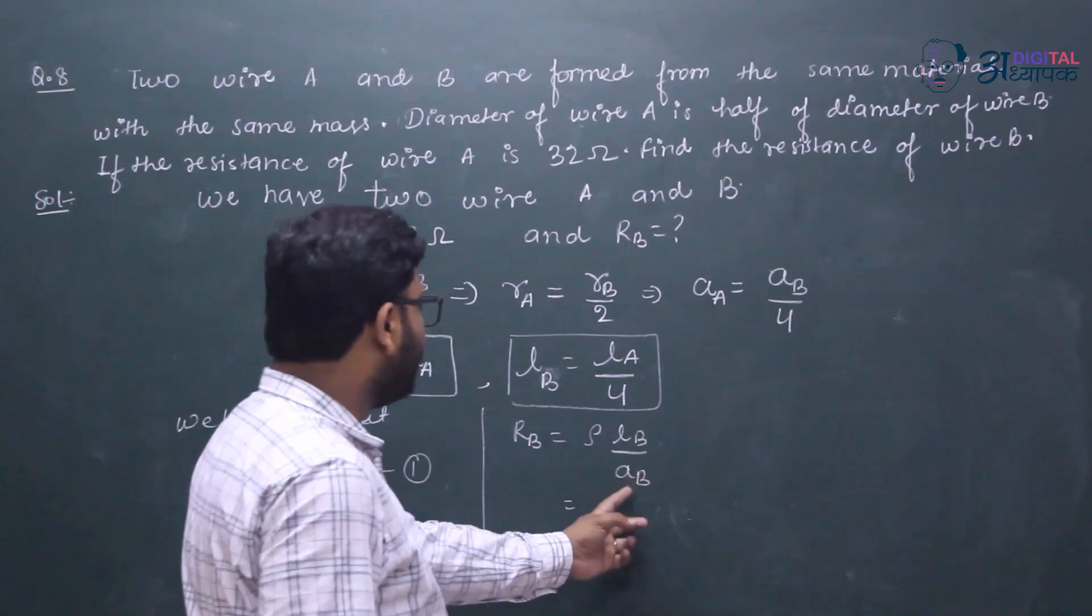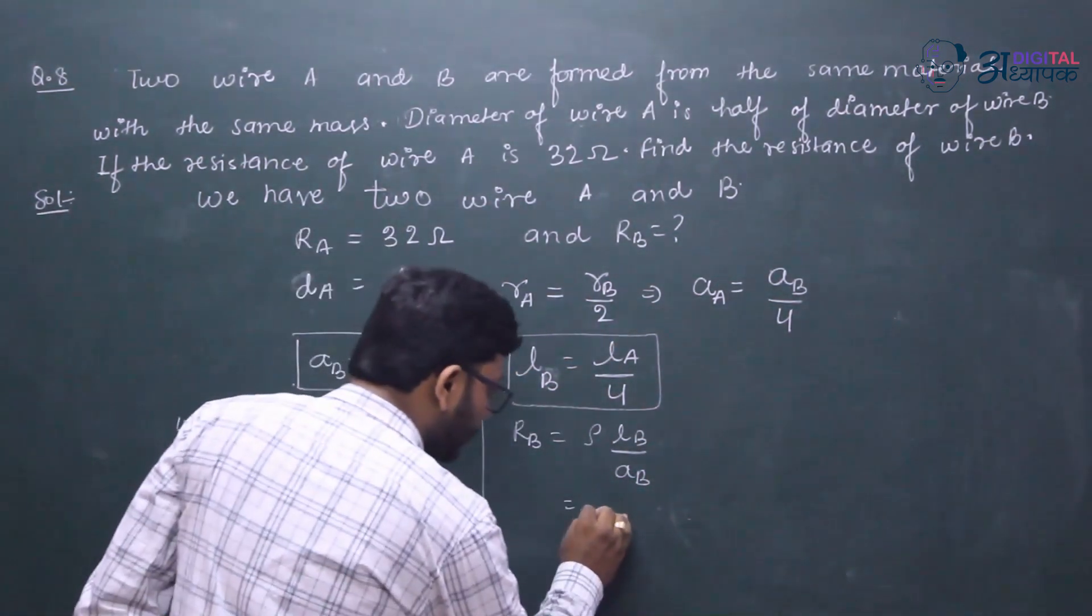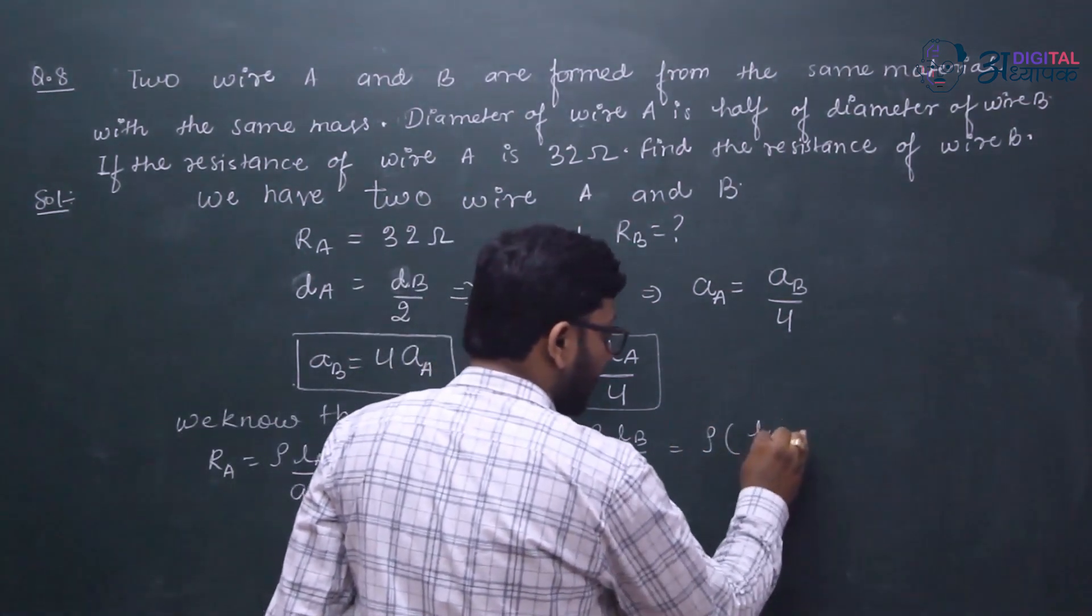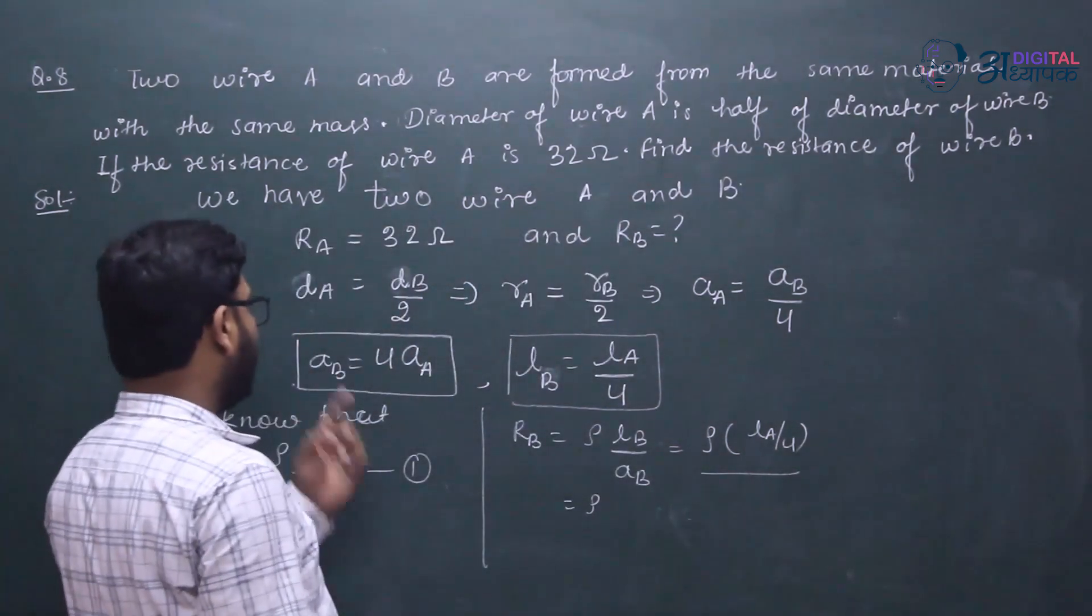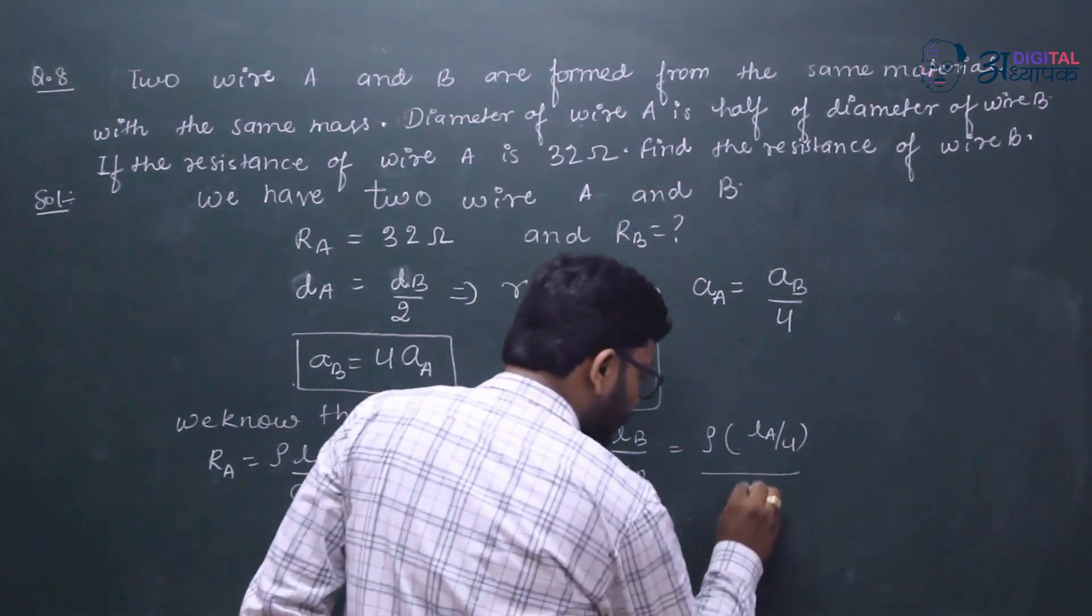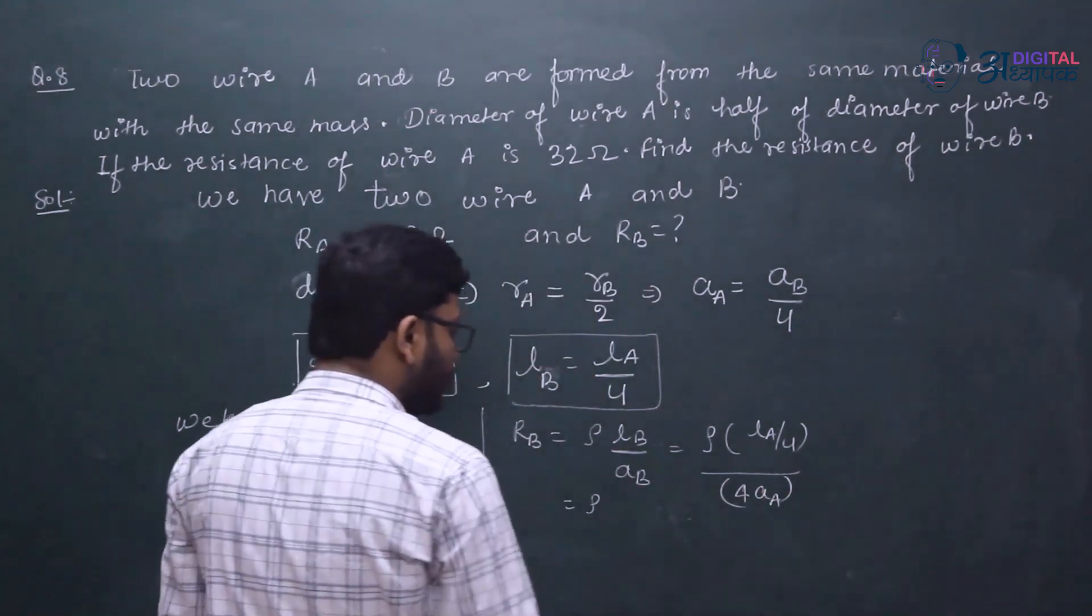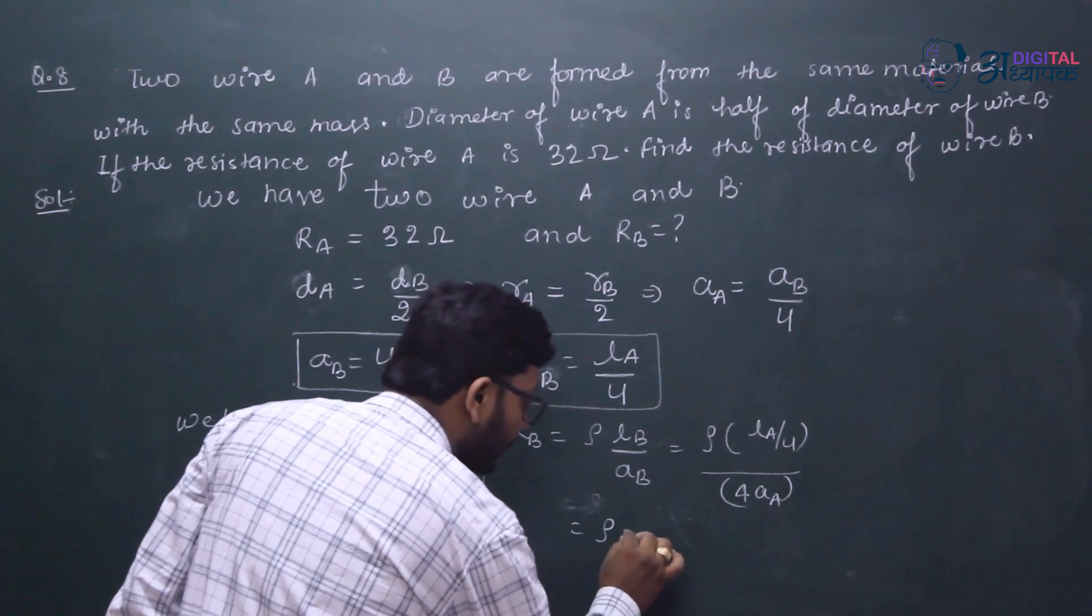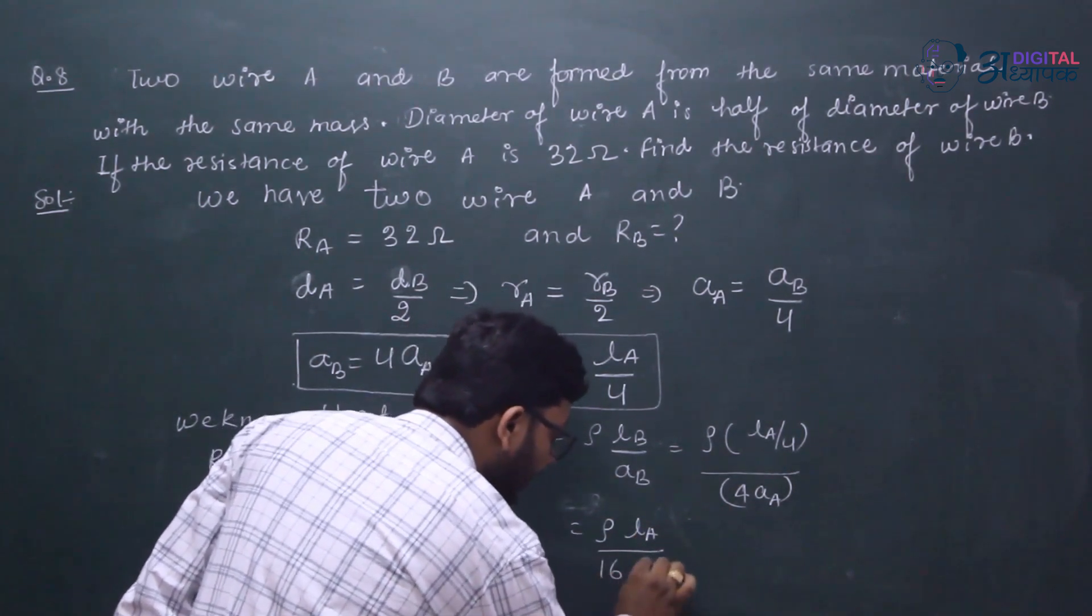AB is equal to AB. LA by 4, so ρLA by 4, and AB is equal to 4AA. If we write this out, RB is equal to ρLA divided by 16AA.